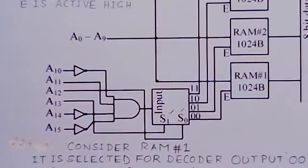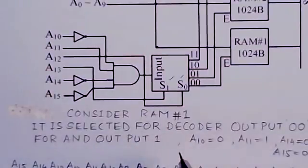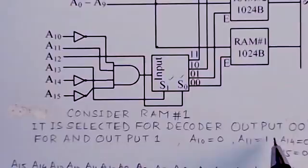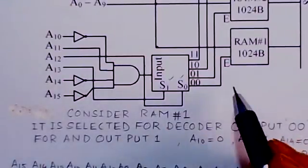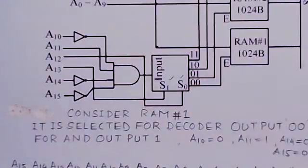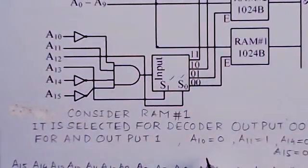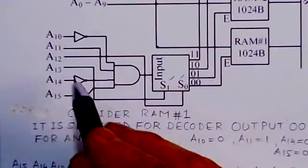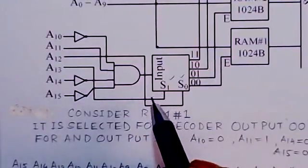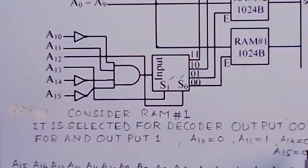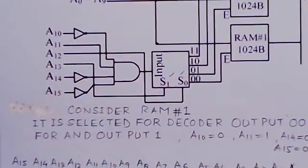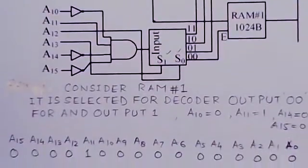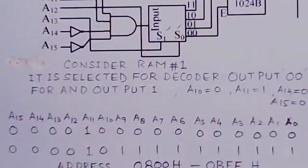Let us consider RAM 1. It is selected for the decoder output of 00. This 00 output will select this RAM. And we know that A10 would be 0, A11 is 1. For this, A14 and A15 would be 00 to make it 1. These are the various options here, and we will see what are the corresponding address locations.